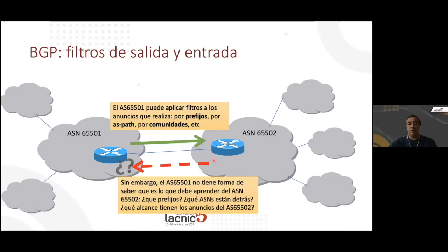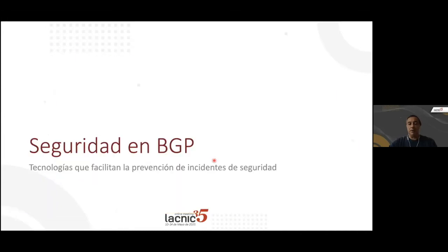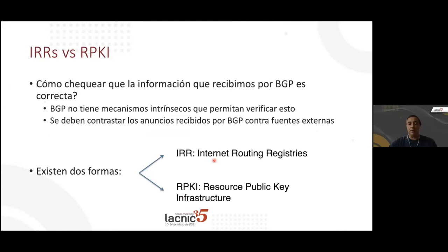Therefore, AS-65502 will have to provide this information separately, outside of BGP. There are two ways to do so using technologies provided for security incident prevention: Internet Routing Registries and RPKI. These are separate databases from BGP that allow us to cross-check the announcements we receive through BGP, verifying each announcement against what has been registered in these databases.